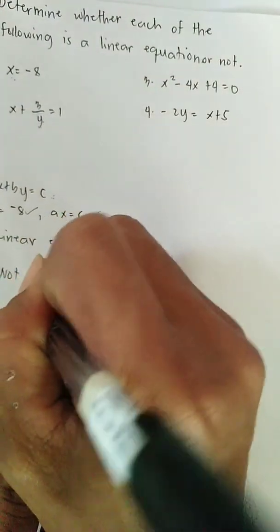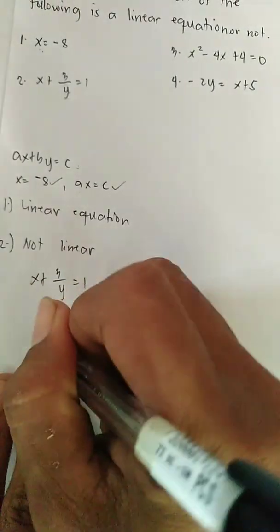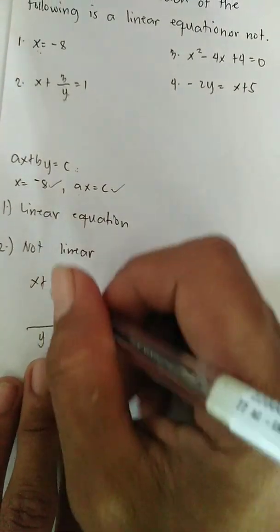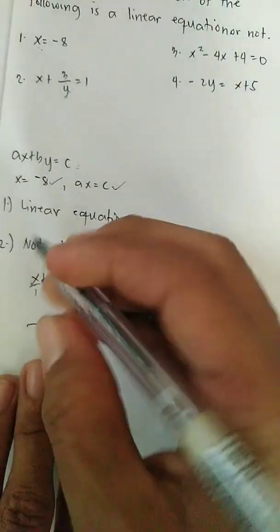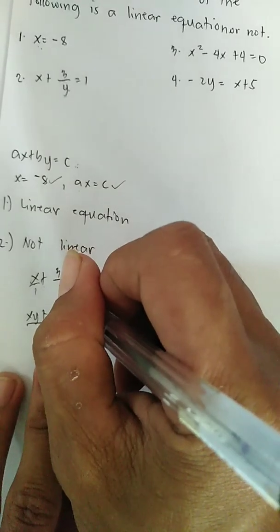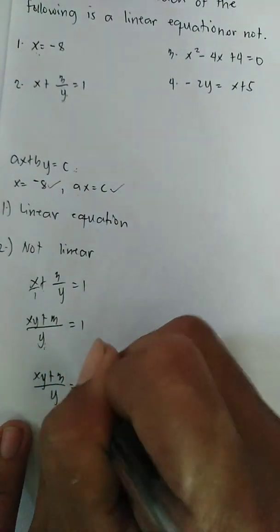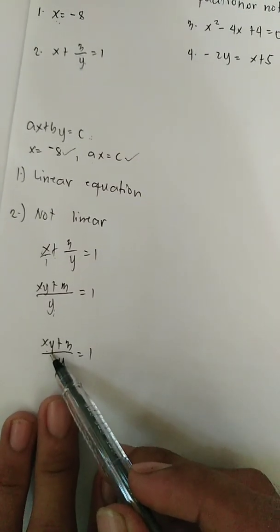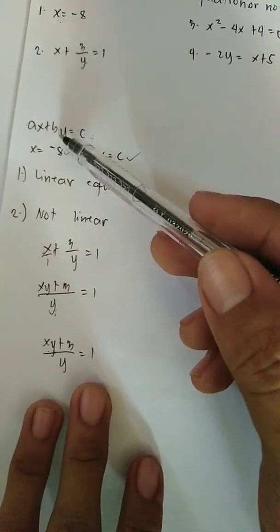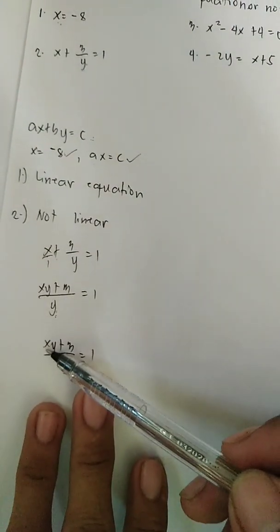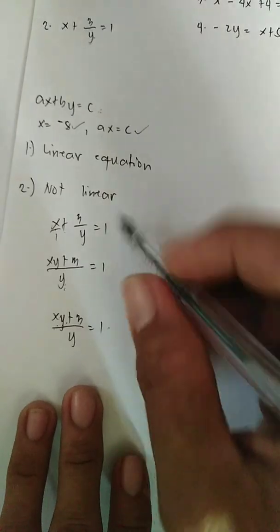Simplifying X plus 3 over Y equals 1: multiply through by Y. The LCD is Y, so Y times X gives XY, plus Y divided by Y times 3 gives 3. So we get XY plus 3 equals Y. As you can see, XY does not conform to the standard form AX plus BY equals C, because X and Y are expressed as a product of each other. So this is not a linear equation.